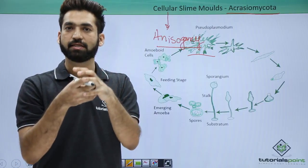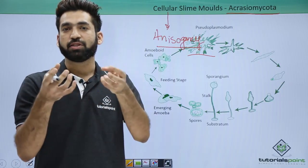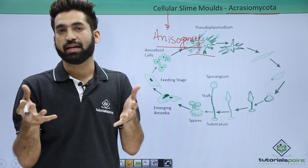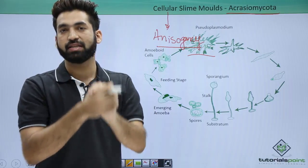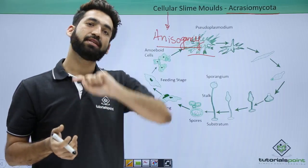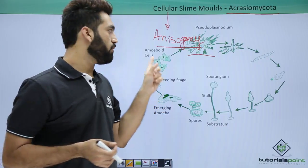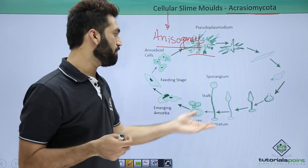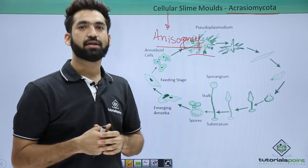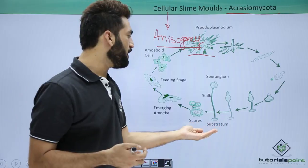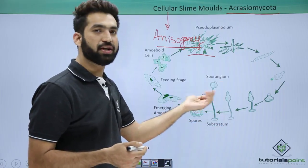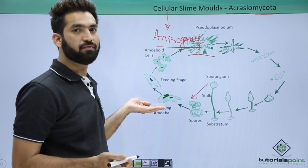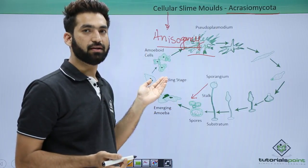As soon as the larger amoeboid cell engulfs the smaller one, the cell wall dissolves and plasmogamy occurs — the fusion of the protoplasm takes place. Inside the larger amoeboid cell, karyogamy happens, forming a zygote. The zygote then forms a sporangium-like structure bearing spores, and after spore germination, the same cycle repeats.